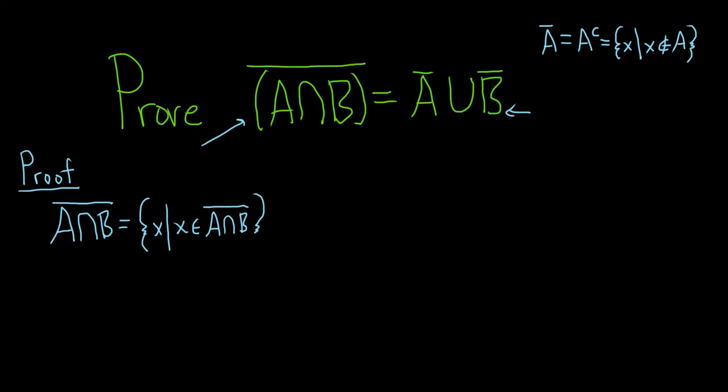Okay, we'll have to use some properties from logic, but I'll refresh your memory, or we'll learn them as we go through the proof. So this is the set of all x such that x is in the complement of A intersection B. So that means that x is not in A intersection B.